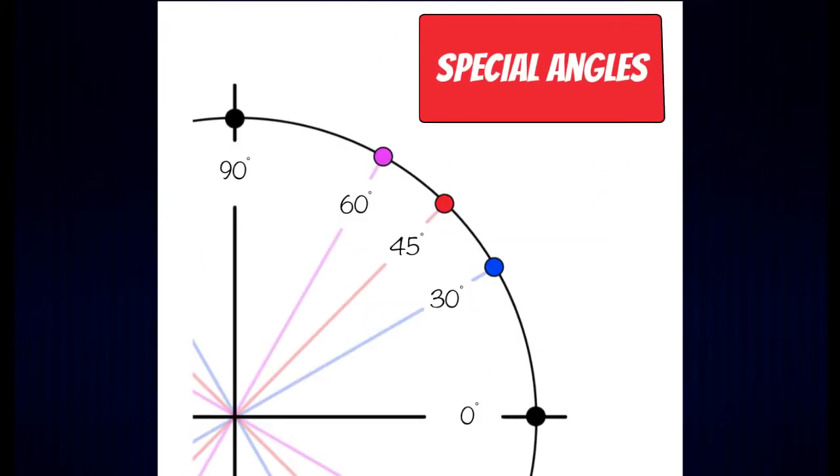The angles that we typically memorize in a unit circle are considered special angles, and here are the special angles in quadrant one in degrees: 0, 30, 45, 60, and 90.